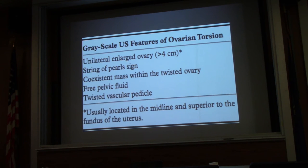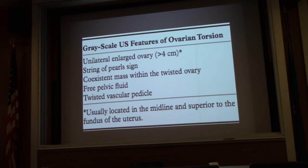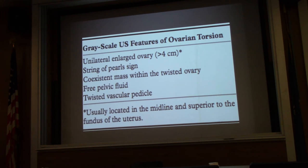Some grayscale features are suggestive of torsion, with the more specific ones being an enlarged ovary — greater than five centimeters mean diameter. Any ovary or structure causing a mean diameter of five centimeters or more increases your risk for ovarian torsion. Free fluid is another important finding. Enlarged ovary and free fluid are the most specific findings you'll see in ovarian torsion. Other signs include a string of pearl sign — the ovary is very enlarged and edematous, pushing all the follicles to the periphery. A twisted vascular pedicle is very hard to visualize, but if seen, it is pathognomonic.